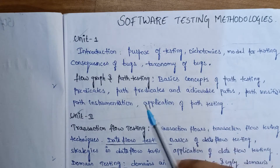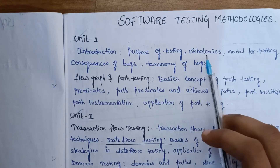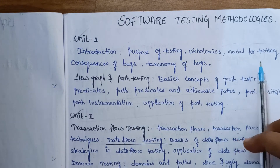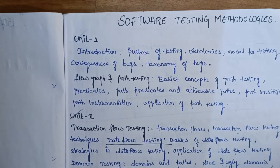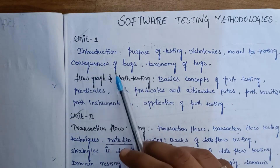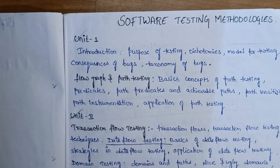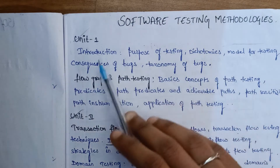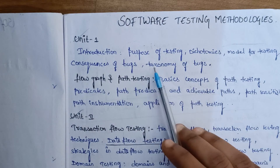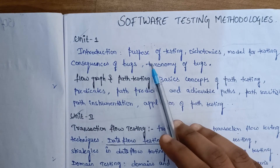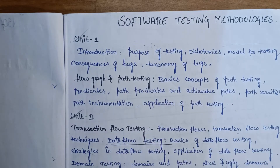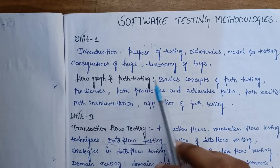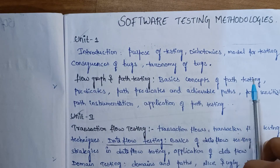The topics covered include: Dichotomies and Differences, Models for Testing, Consequences of Bugs, Taxonomy of Bugs — these are in Chapter 1. Then Flow Graphs and Path Testing, and Basic Concepts of Path Testing.